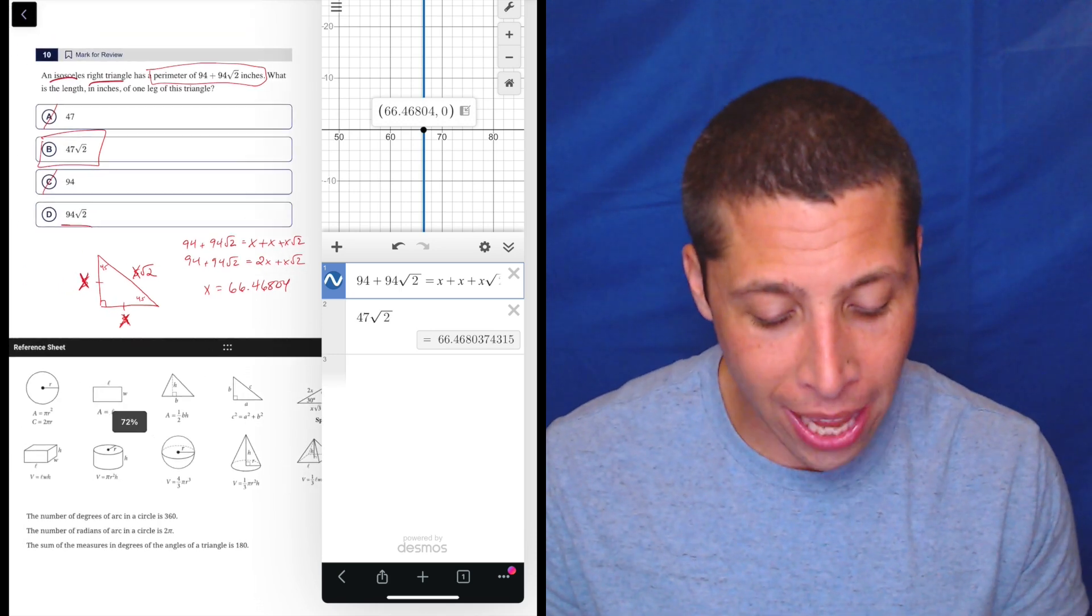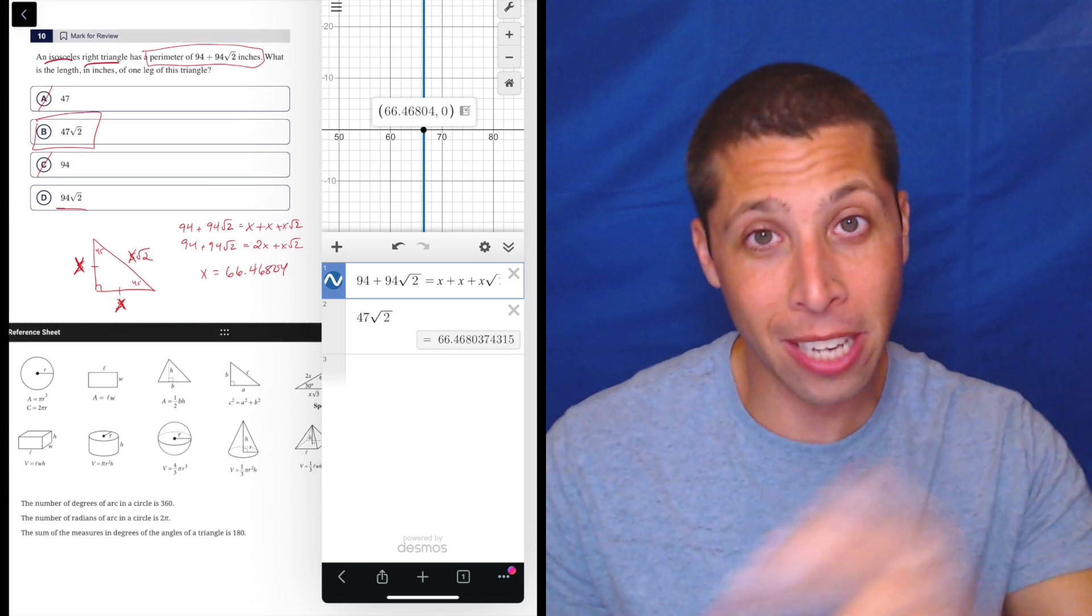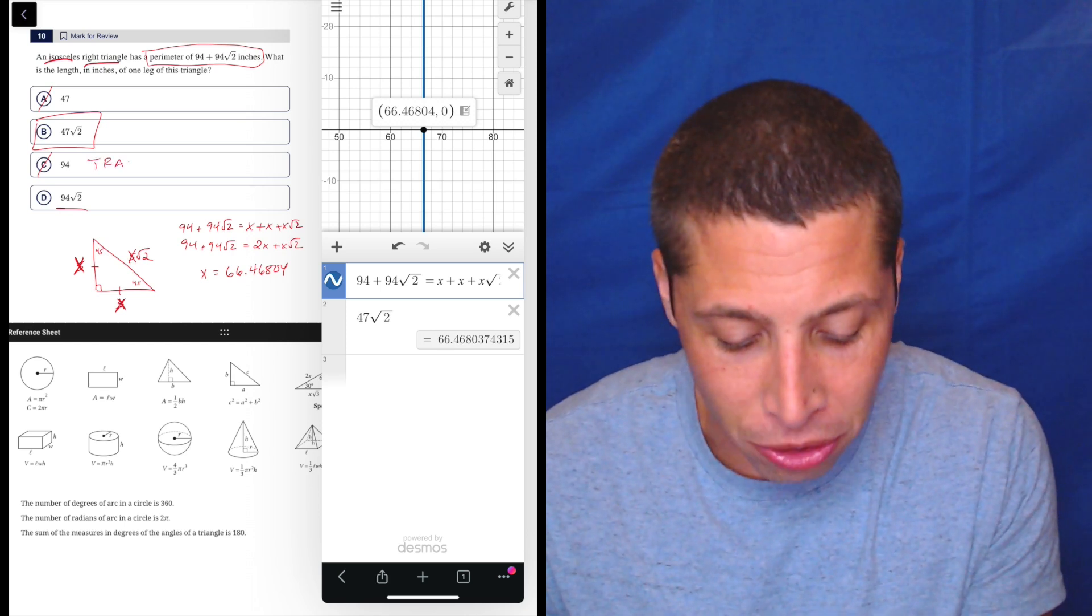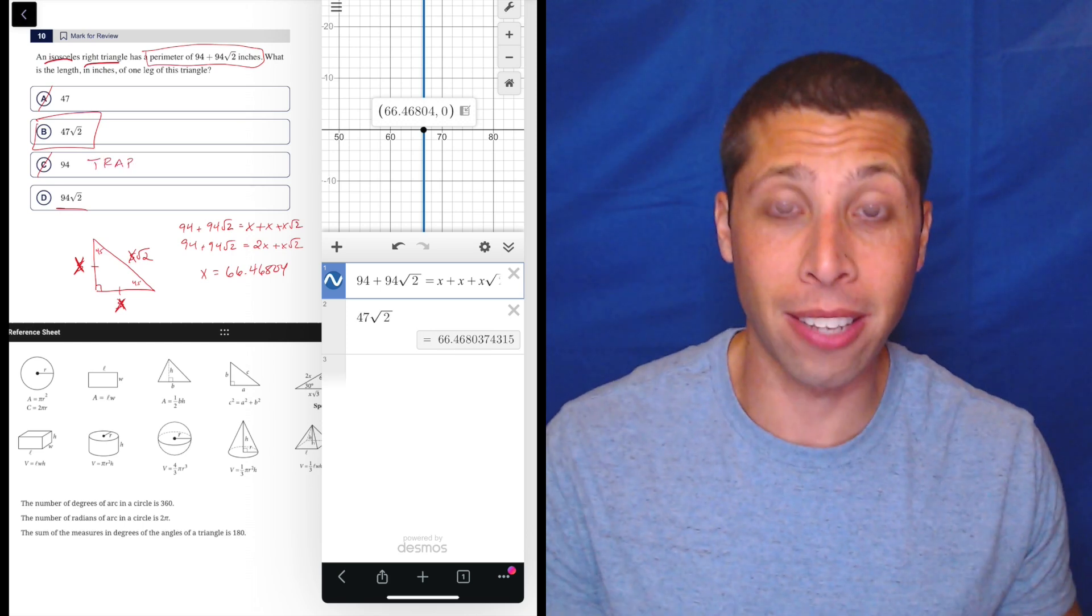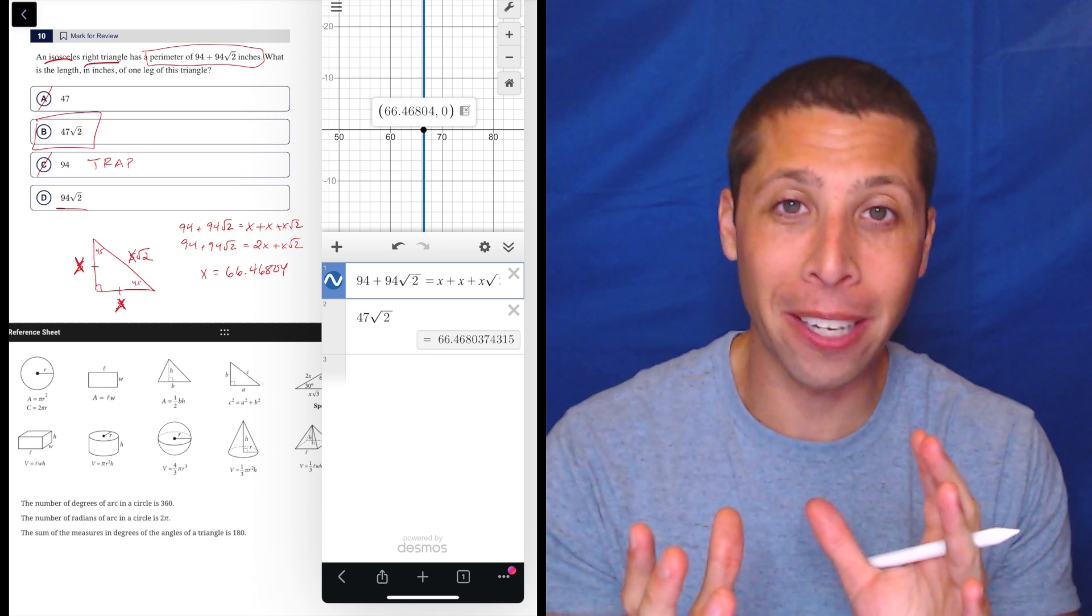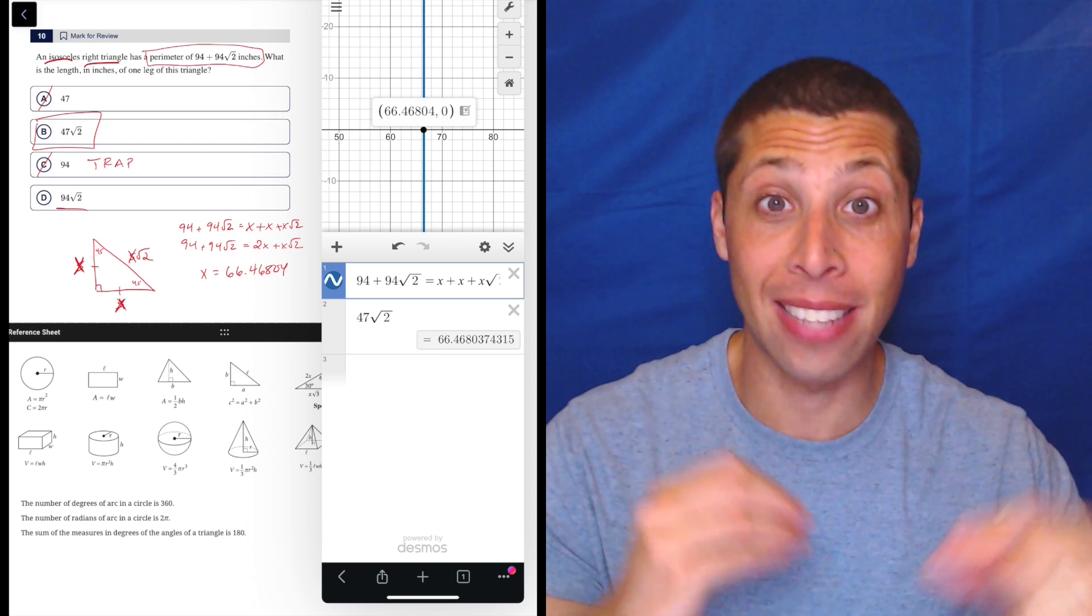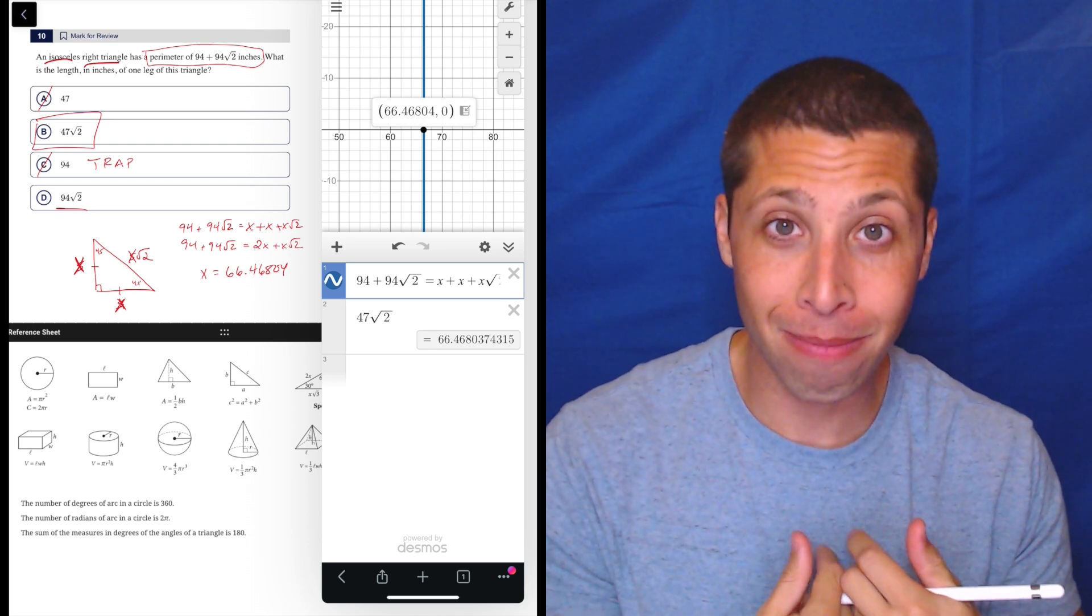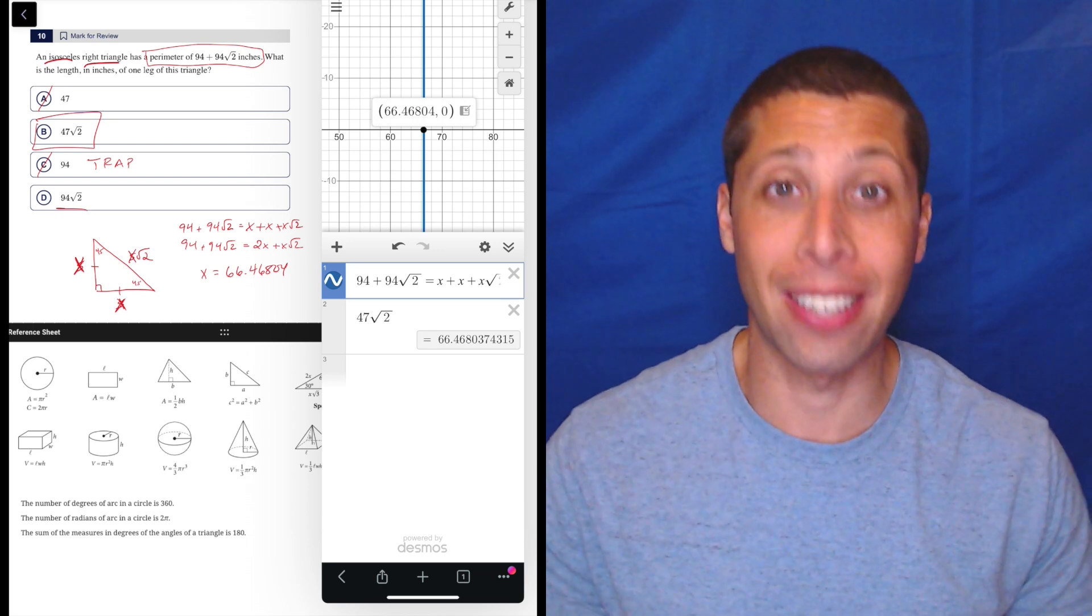And so there you go. Much easier than doing it by hand. So don't forget, even on geometry, Desmos can make your life a lot easier, but there are also these kind of trap answers that we expect in other parts of the test. They're going to show up in geometry too. So geometry is its own little topic on the SAT, but it still obeys a lot of the same SAT kind of rules that we see in other places. So don't get complacent. Don't try to treat it as something different. It's just still part of an SAT.